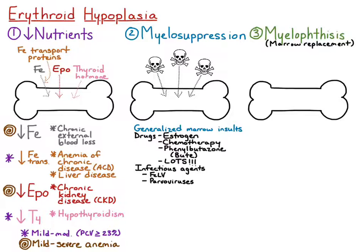Ehrlichia canis is a bacterial infection of mononuclear cells. With chronic Ehrlichia canis infection, it can cause aplastic anemia or myelosuppression of all cell lines — red cells, neutrophils, and platelets.